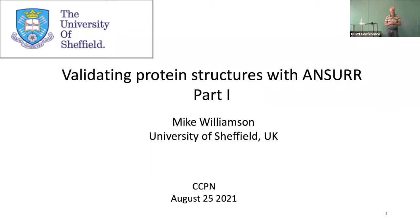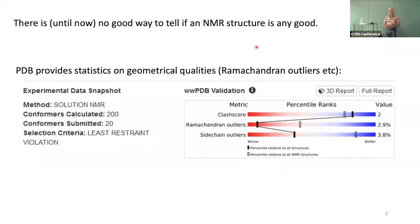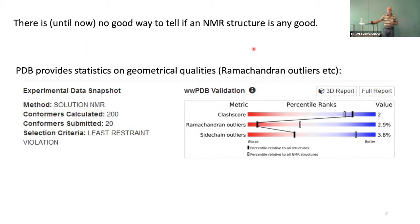I'm going to kick off by talking about what ANSWER is. It's called ANSWER because it stands for something I'll show you in a minute, but it's also the answer to all your problems. Basically, it says whether the structure that you have — an NMR structure or a structure derived from other methods — matches the experimental data, in particular the chemical shift in solution. So it's doing a validation — basically asking, is my structure correct?